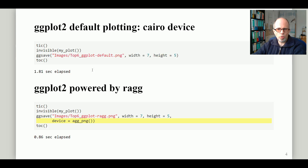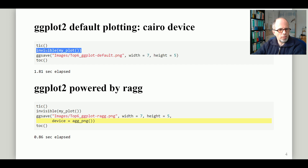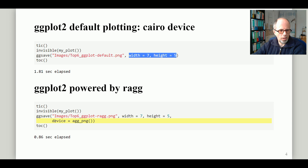So on to the timings. I create the plot just using the myplot function — I don't show it here, so I do it invisibly, but I can still save it. The two code blocks are almost identical. I use the same width and height specification, and the only difference is that in the second case I'm using the ragg device by specifying device equals agg_png.